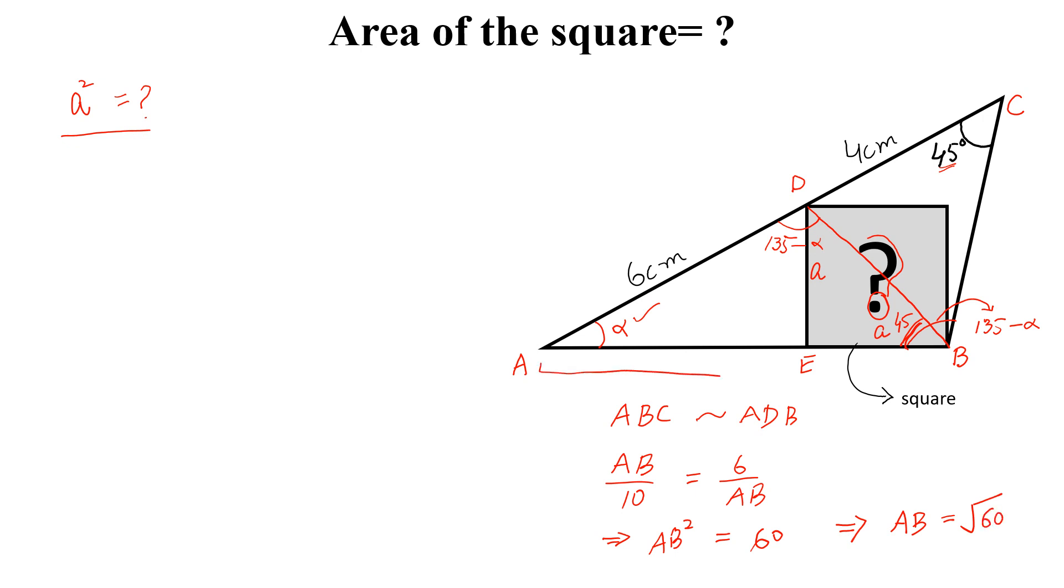If this length is square root of 60, then this length AE, this will be square root of 60 minus A. Now if we look at the triangle, triangle ADE, this is a right angle triangle.